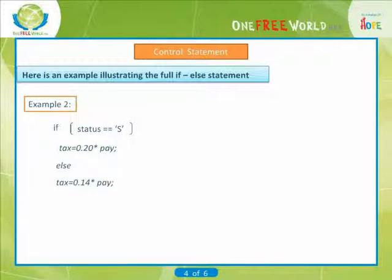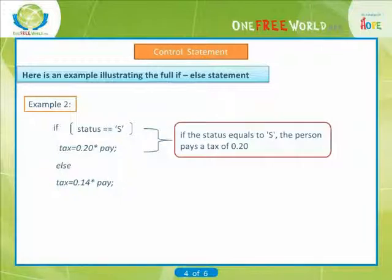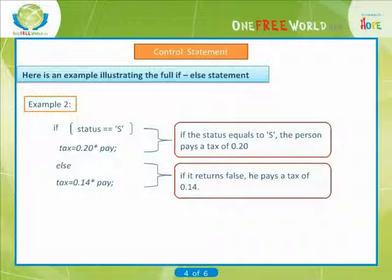In this statement, if the status equals 's', the person pays a tax of 0.20, and if it returns false, he pays a tax of 0.14.